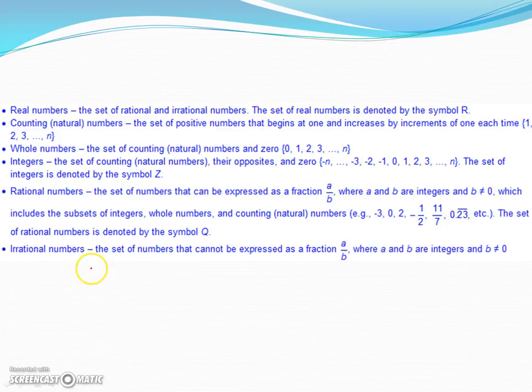Finally, we have a group called irrational numbers. Irrational numbers are the set of numbers that cannot be expressed as a fraction a over b, where a and b are integers and b is not equal to zero. So basically any other real number that cannot be converted to a fraction, such as the number pi or square root of 2, are some good examples. These are considered irrational numbers.